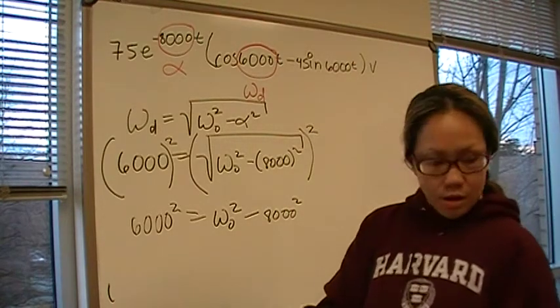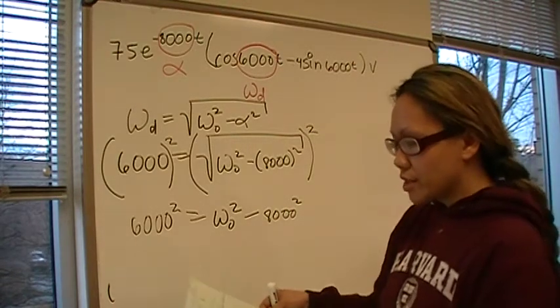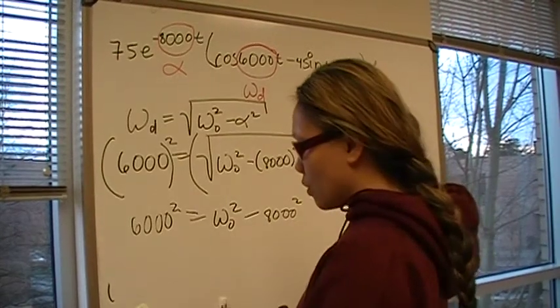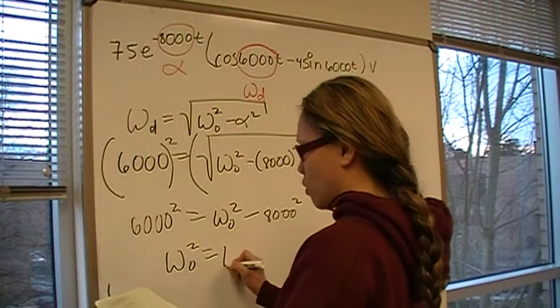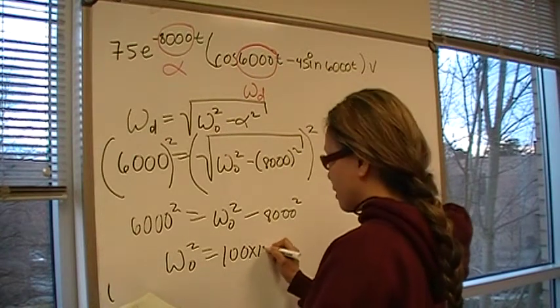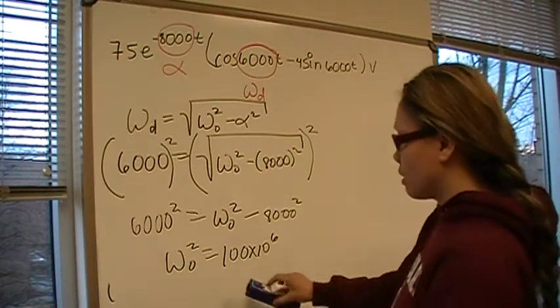When you put it into your TI-89 or your calculator, you should come up with omega 0 squared equals 100 times 10 to the 6th.